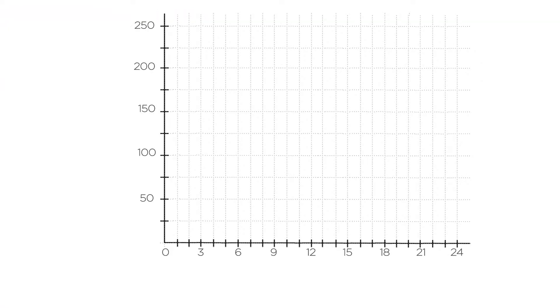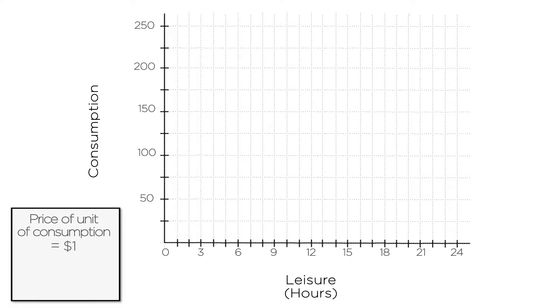Let's return to our graph from the last lecture, with hours of leisure on the horizontal axis and the level of consumption on the vertical axis. We're going to use a trick we've used in the past to simplify things, and assume that the price for one unit of consumption is $1. That way we interpret the numbers on the y-axis as the number of dollars spent on goods.